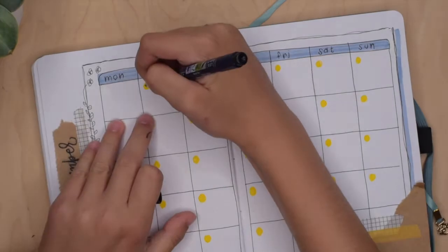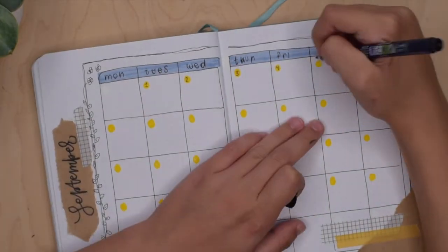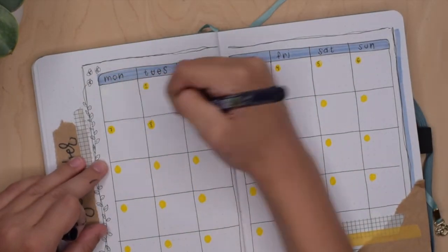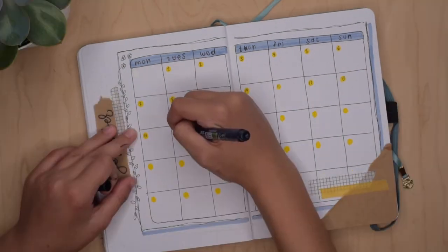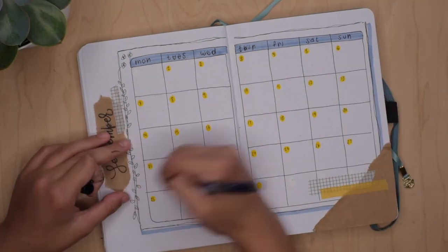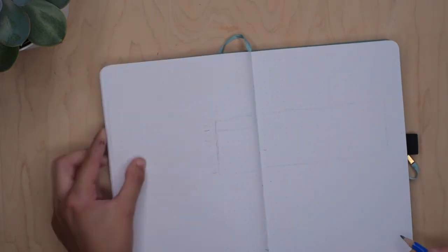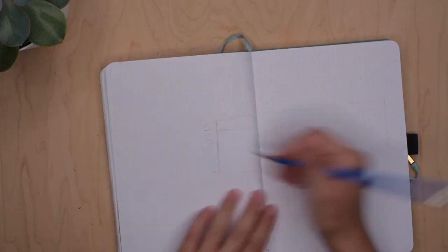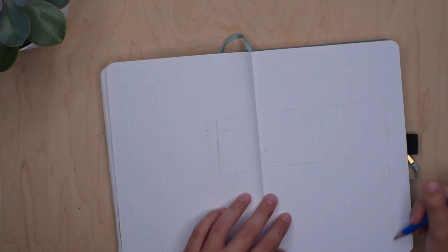So now I'm writing out the numbers for the month with my Tombow Fudenosuke. Also, this is a perfect chance to let you guys know that all the links of my supplies will be linked in the description down below in case anybody is interested.